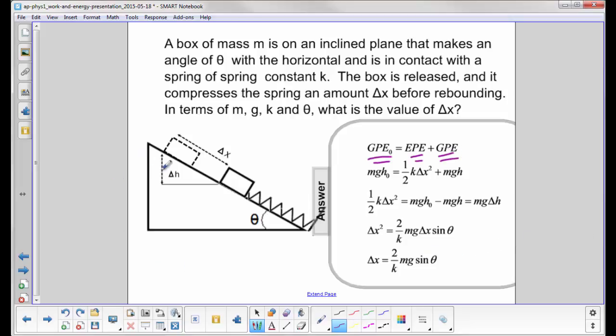Its initial height we're going to call h0, and h0 is the height from here down to the bottom. Here where it has elastic potential energy it's one half K delta X squared.